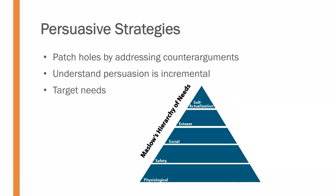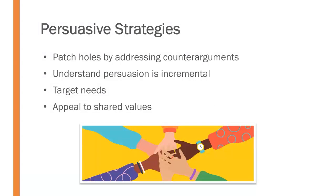We also need to target needs when thinking about persuasion. You can use Maslow's hierarchy of needs — where is the audience and what can I do to meet them at that area of need? We ought to appeal to shared values, letting the audience know we have their best interests at heart, that we understand who they are and share their values. Hopefully you now have a better idea of how to go about persuading. The most important thing initially is to identify your purpose, and once you identify that purpose as persuasion, you can use these strategies to deliver a more effective presentation.